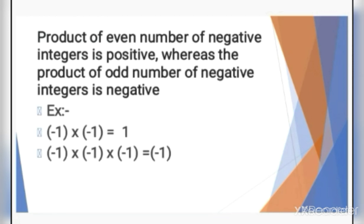The product of an even number of negative integers is positive, whereas the product of an odd number of negative integers is negative. For example, minus 1 into minus 1 gives 1. But if we multiply minus 1 three times, the answer will be minus 1.